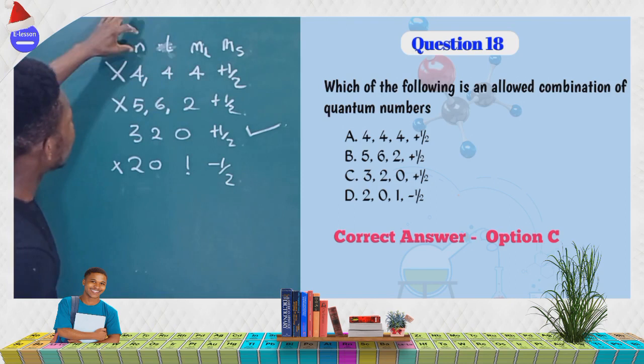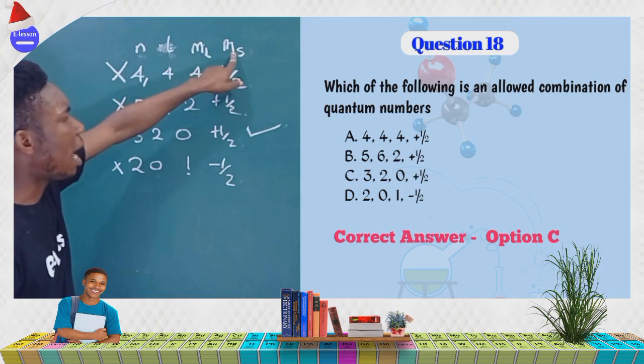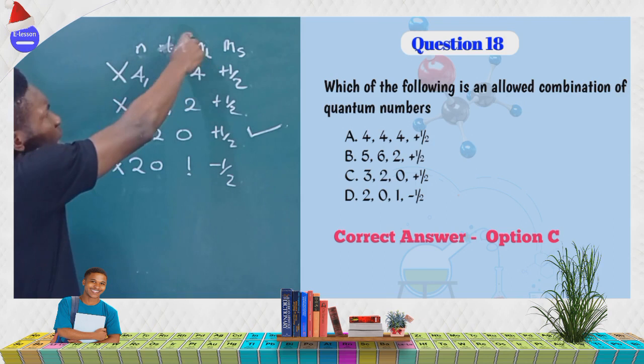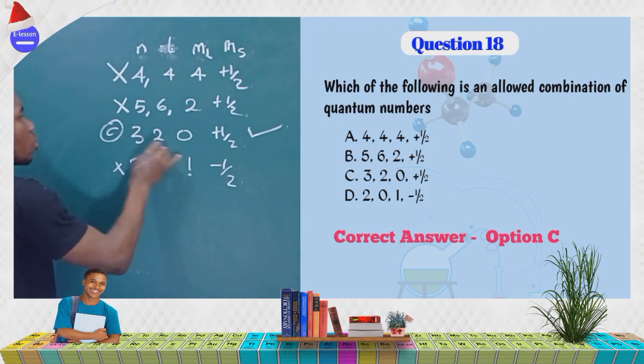To summarize the rules: n must be greater than L; L must be greater than or equal to ML (ML cannot exceed L); and spin can only be +½ or −½. Applying these rules, the correct answer is option C: n=3, L=2, ML=0, spin=+½.